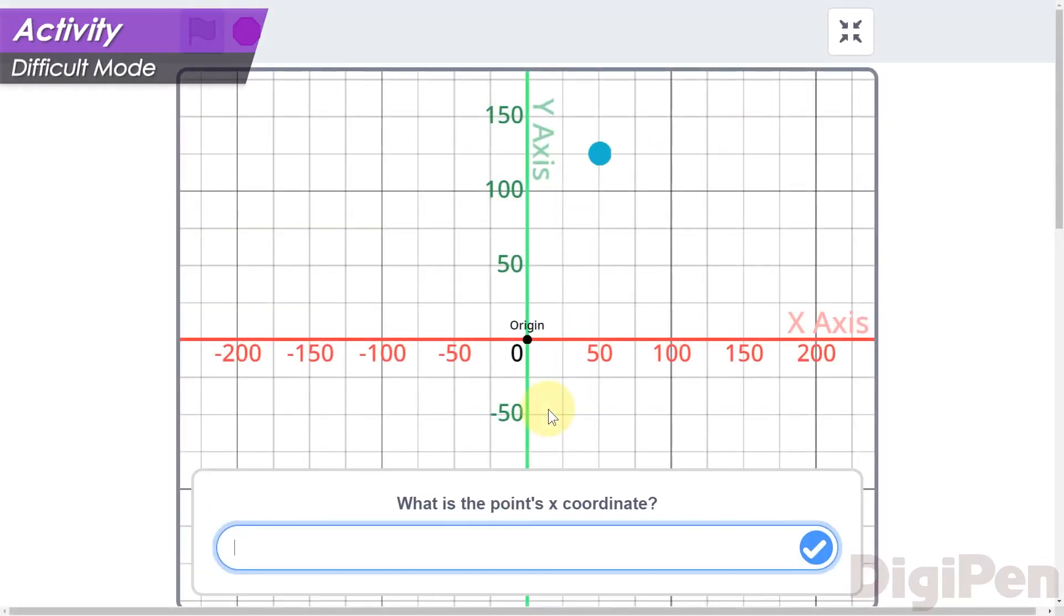This time, the circle is not restricted just to the x and y values that have labels. It can also go halfway between them.